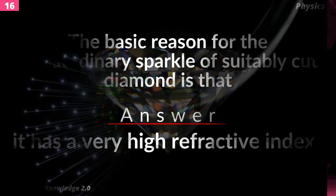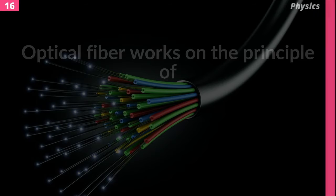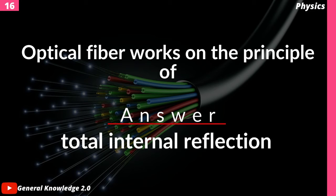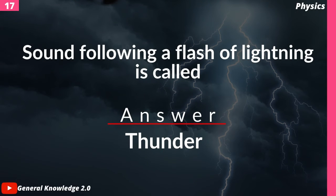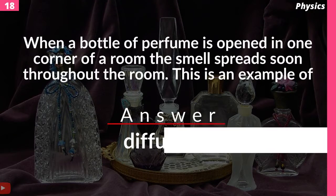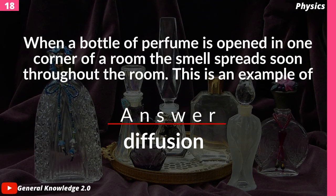The basic reason for the extraordinary sparkle of a suitably cut diamond is that — answer: it has a very high refractive index. Optical fiber works on the principle of — answer: total internal reflection. Sound following a flash of lightning is called — answer: thunder.